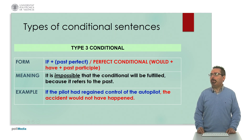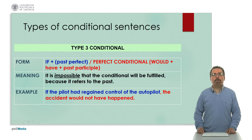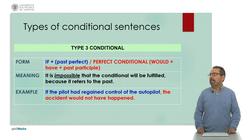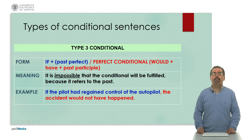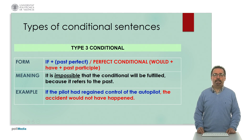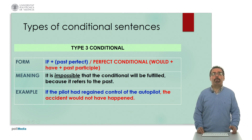Finally, in type three conditionals we have a different structure: an 'if' clause followed by past perfect, and then a perfect conditional — that means 'would' plus 'have' plus past participle. In this case it is impossible that the condition will be fulfilled because it refers to the past. For example: 'If the pilot had regained control of the autopilot, the accident would not have happened.' It refers to something in the past, so the condition is impossible.